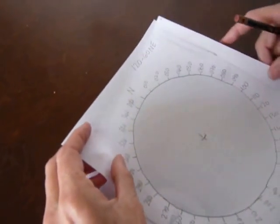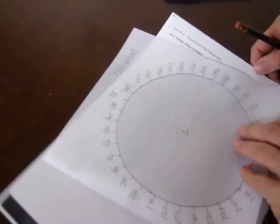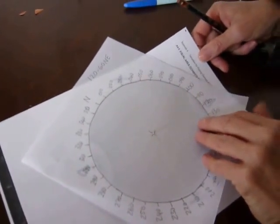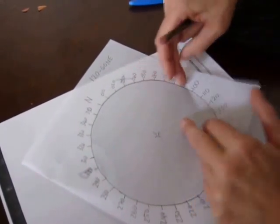So we rotate around until that AB line is exactly at 120 degrees, which it is there.